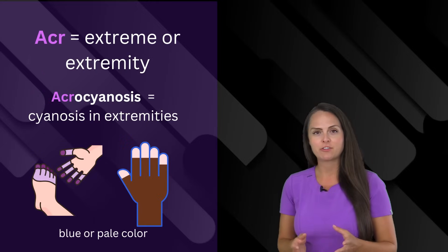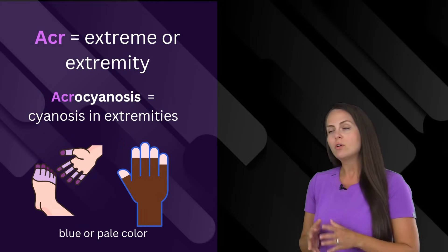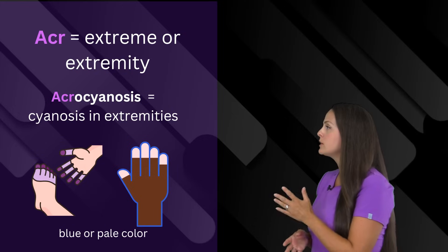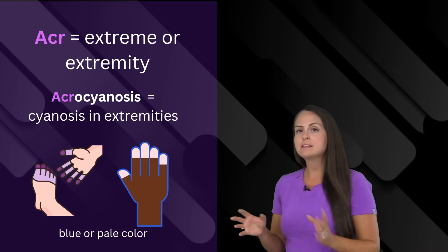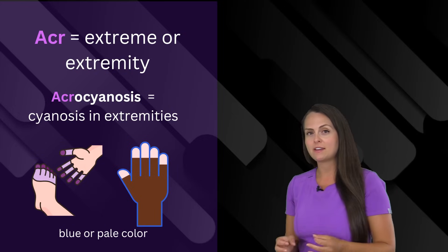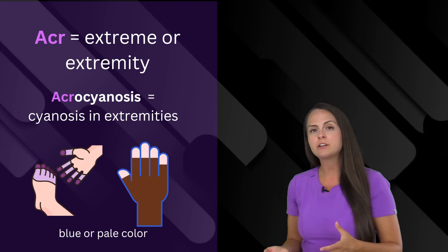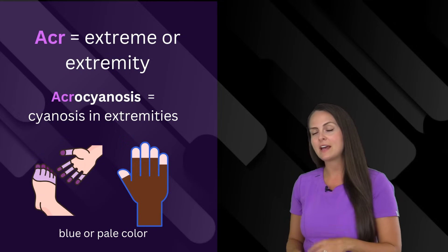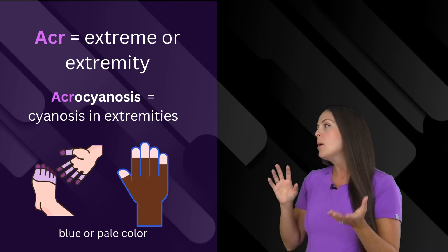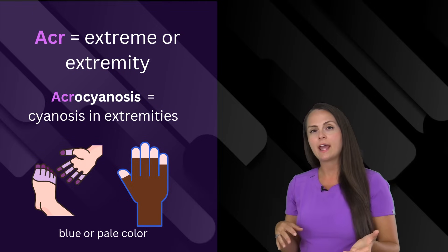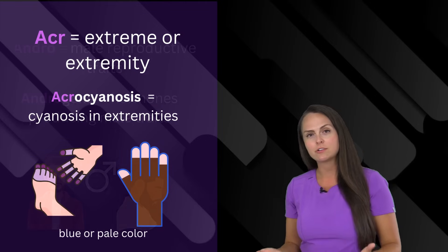And then we have ACRA, which means either extreme or extremity. And you can see this prefix used in the term acrocyanosis. And this is something that we look for in the newborn during the APGAR assessment. Cyanosis means a bluish color. So we are seeing bluish colors in either the hands or the feet, which are the extremities.